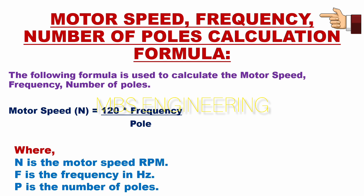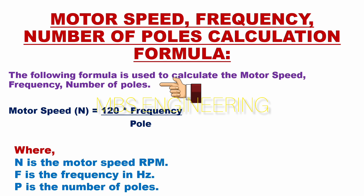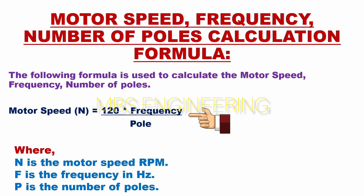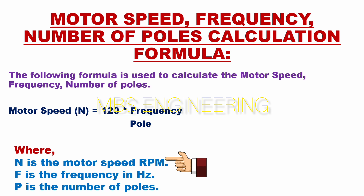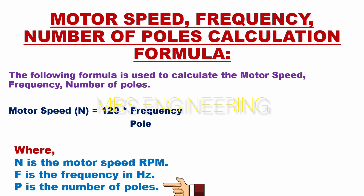We will now learn the motor speed, frequency, and number of poles calculation formula. To calculate the motor speed, frequency, and number of poles, we use the following formula: Motor speed N equals 120 multiplied by frequency divided by poles. Here, N is the motor speed in RPM, F is the frequency in hertz, and P is the number of poles.